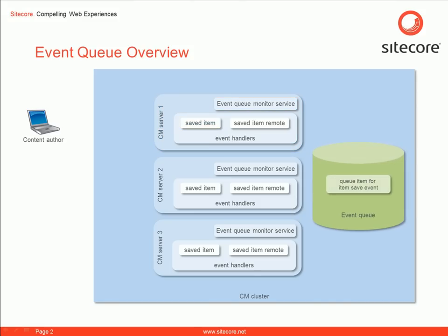Each Sitecore server has a process that periodically checks the Event Queue to see if any events are available. The Event Queue monitor searches for events that meet two conditions. First, the event cannot have been created by the current server. Second, the event must be new, meaning it has been created since the last time the Event Queue monitor searched for events.